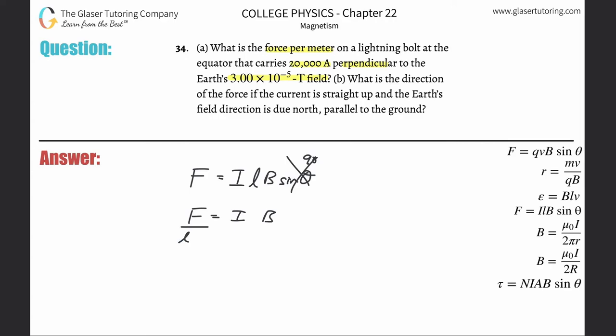Here's the formula: the force per length is equal to the current multiplied by the magnetic field. Look at how easy that is. Force per length equals the current multiplied by the magnetic field.